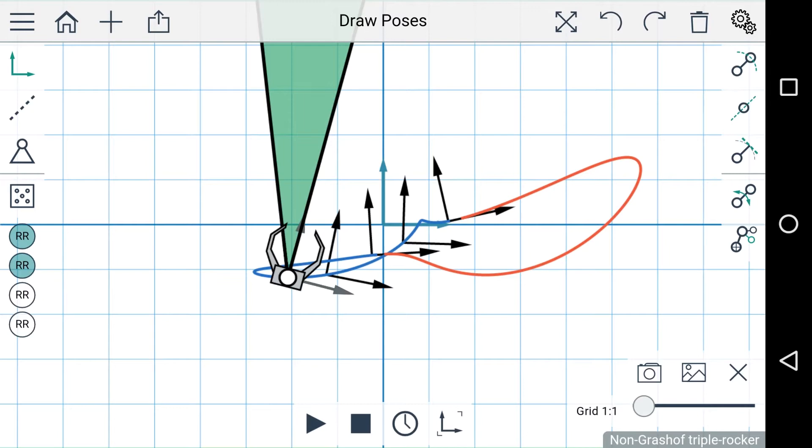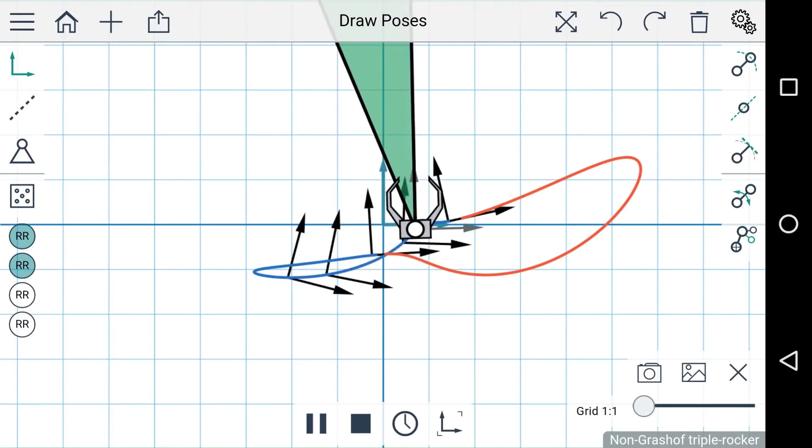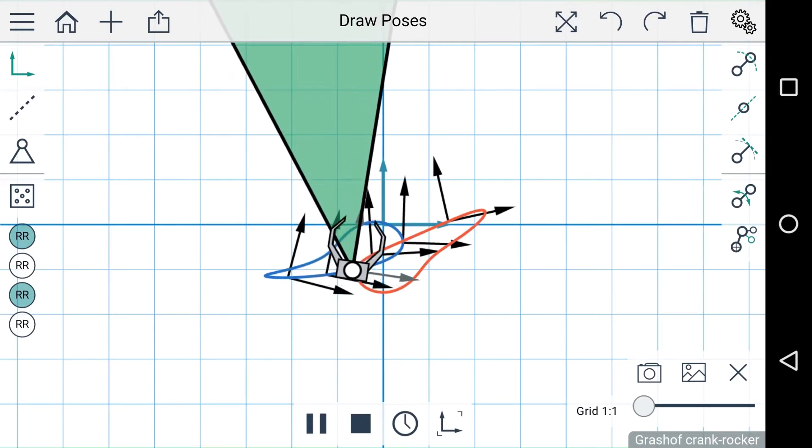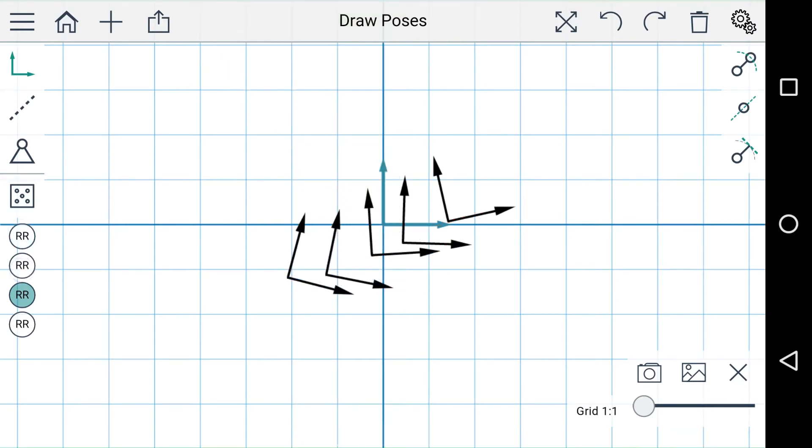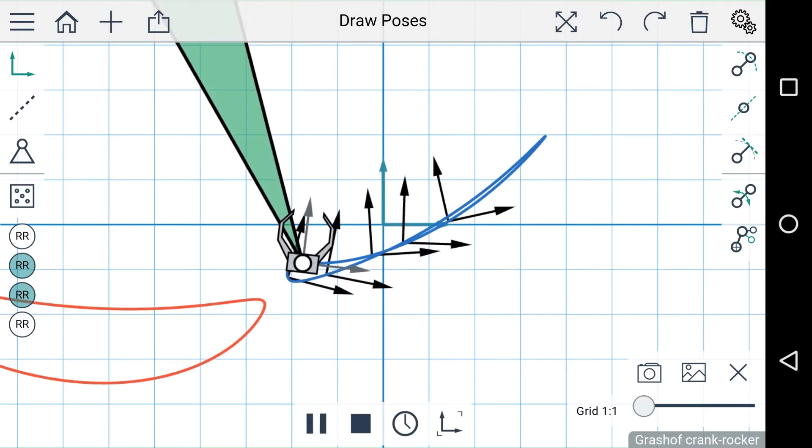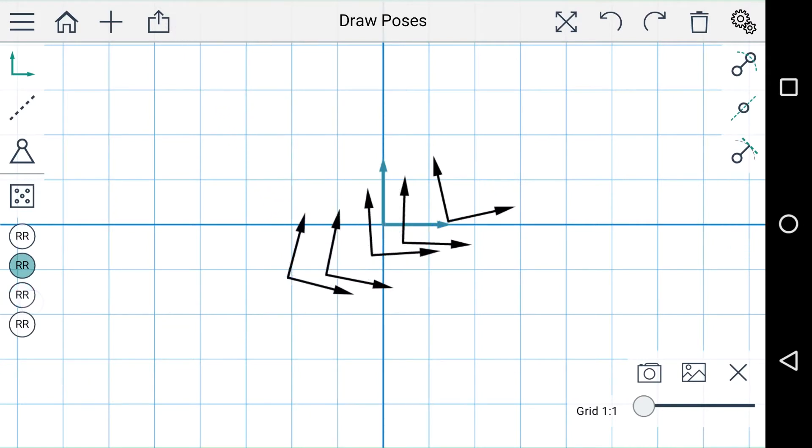The first two are automatically selected but you can choose any two dyads to give you a four bar linkage that solves this problem. So I can choose these two, these two, or these two, or maybe these two.